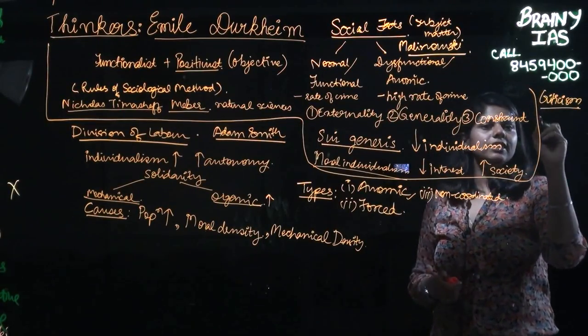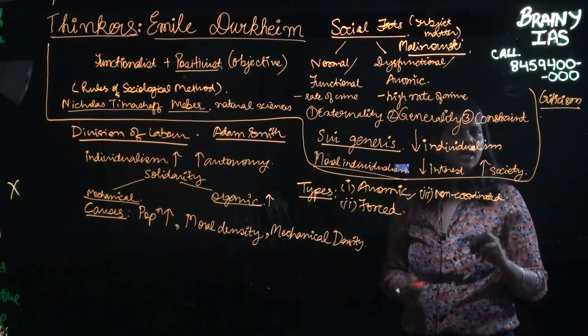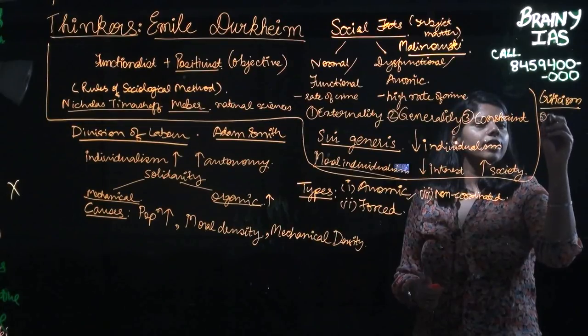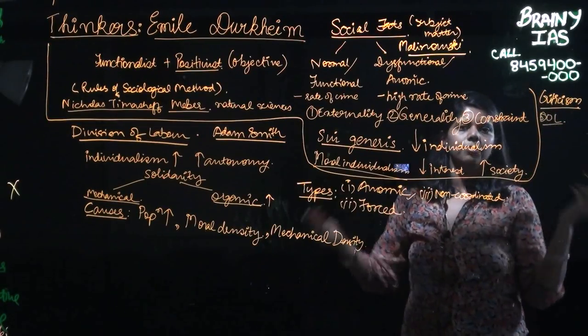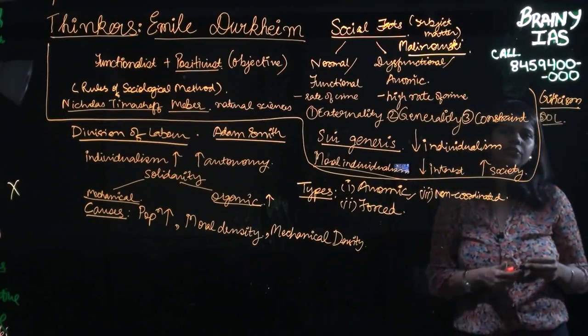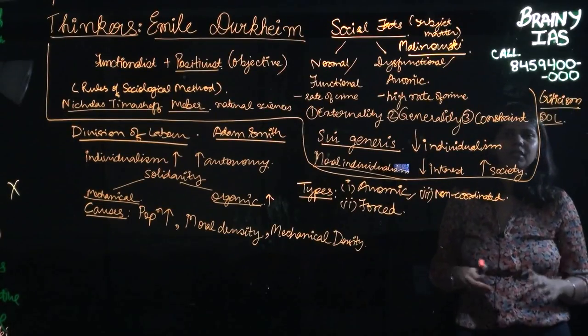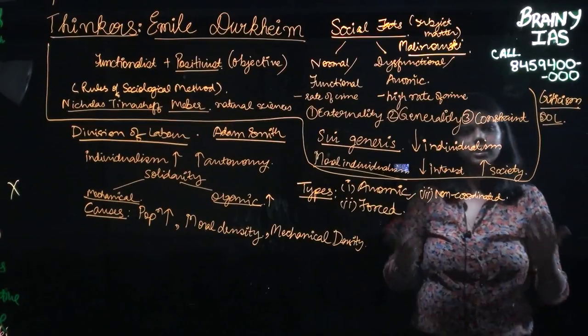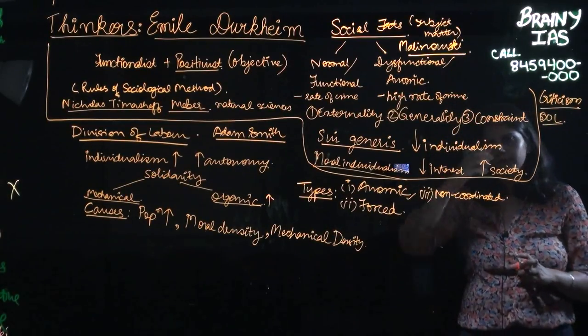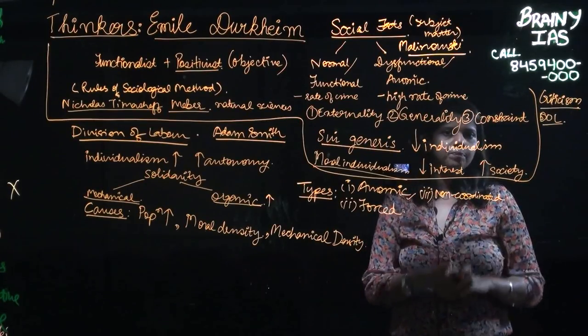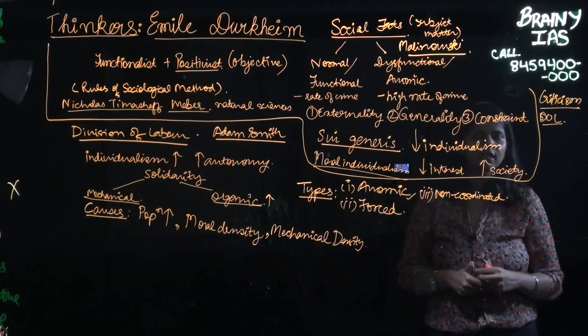So Malinowski basically says that Durkheim misunderstands division of labor as a sign of human progress. He thinks that just because people have become specialized, this doesn't mean that there has been a development in their cognitive ability. It's not that the technology has become very advanced. It's a wrong way of looking at things, according to Malinowski. And that's how he criticized Durkheim.